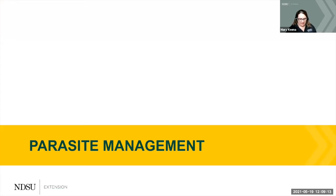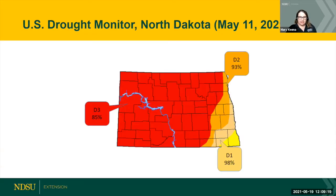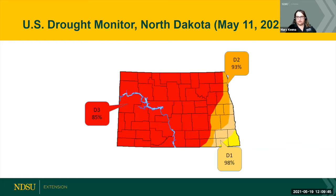Now let's talk about parasite management. The reason we're emphasizing this more this year relates to the U.S. drought monitor for North Dakota as of May 11th, 2021. Our state climatologist says 98% of the state is in at least some kind of drought, and 85% of the state is in extreme drought. You probably already know things are very dry out there — it's not great.